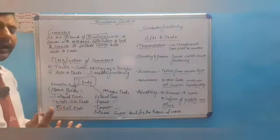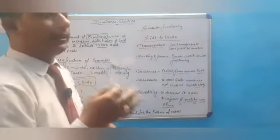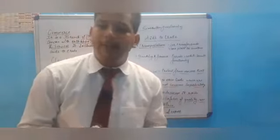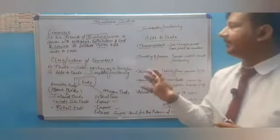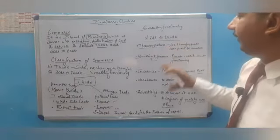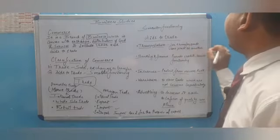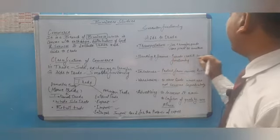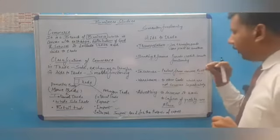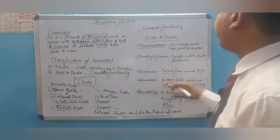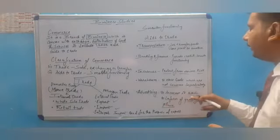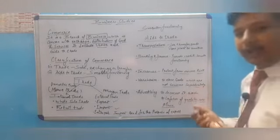For example, suppose I am selling a marker — advertising tells customers the price of that marker, its uses, and the quality I have provided. Aids to trade includes five things: transportation, banking and finance, insurance, warehouses, and advertising.